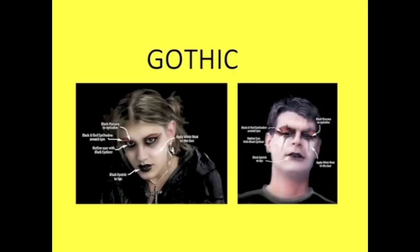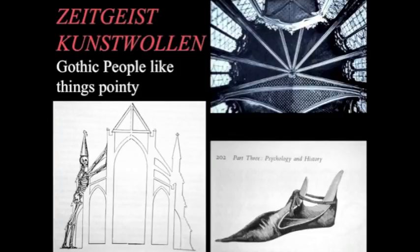You probably all know what the Gothic is. There are a couple of qualities that help us identify it — things like black lipstick, black eyeliner, multiple piercings and so forth. But there are probably some other things also, if we think about Gothic architecture. And so I want to introduce a couple of German words, because nobody liked art history as much as the Germans during the early days of art history. The words are Zeitgeist and Kunstwollen.